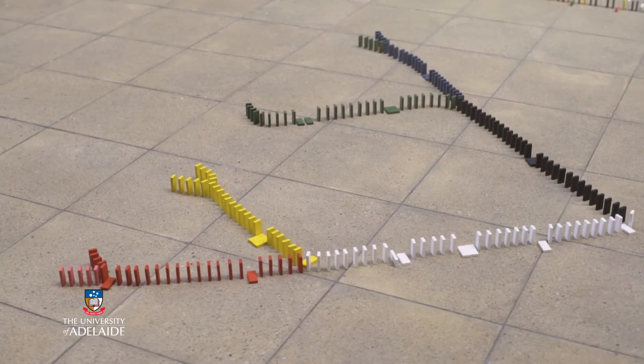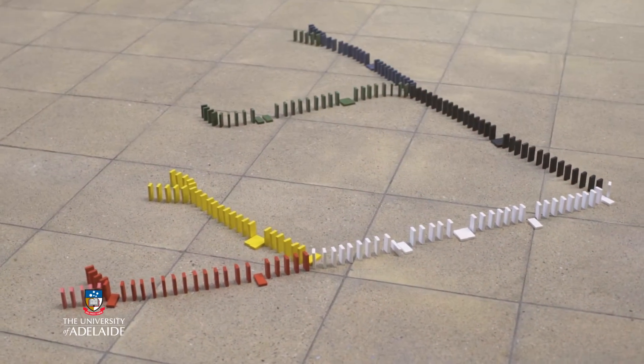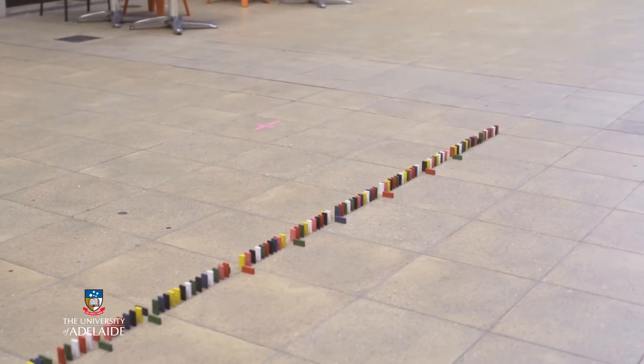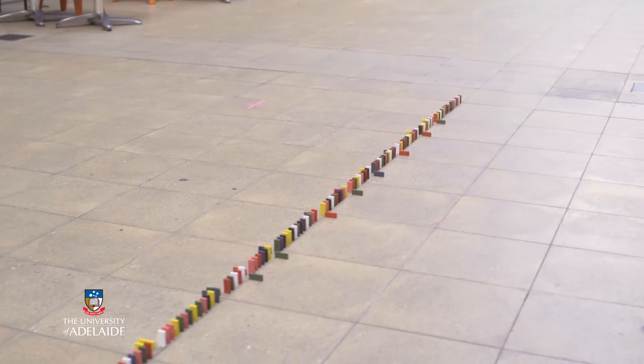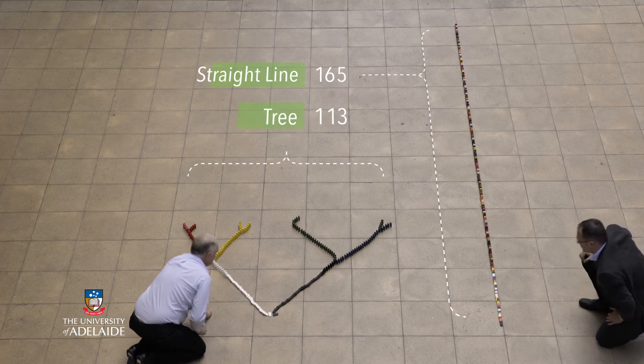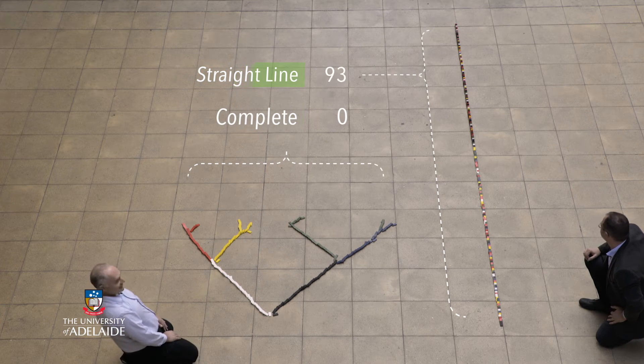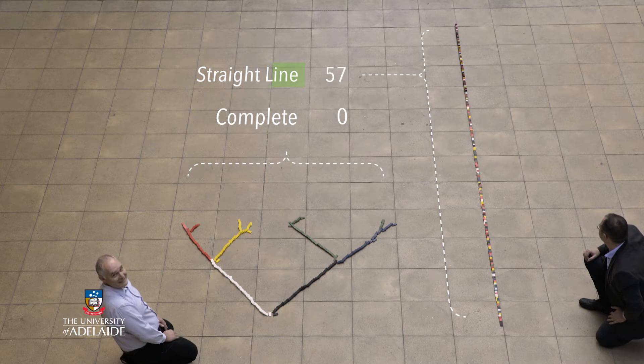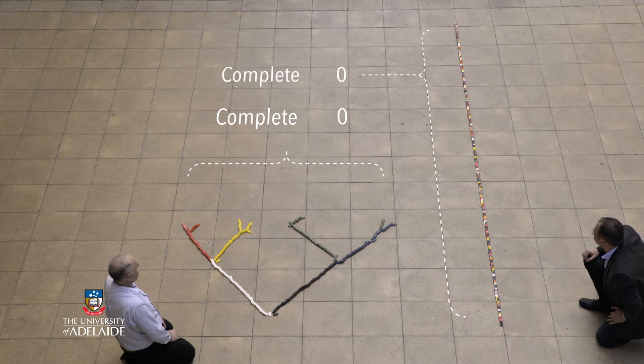You'll be able to take all sorts of different data and set it up in the way that you want. For example, the dominoes on the left are in the shape of a tree, and on the right, a straight line. Watch what happens. Changing the way in which we structure things can make a big difference to how your programs are run.